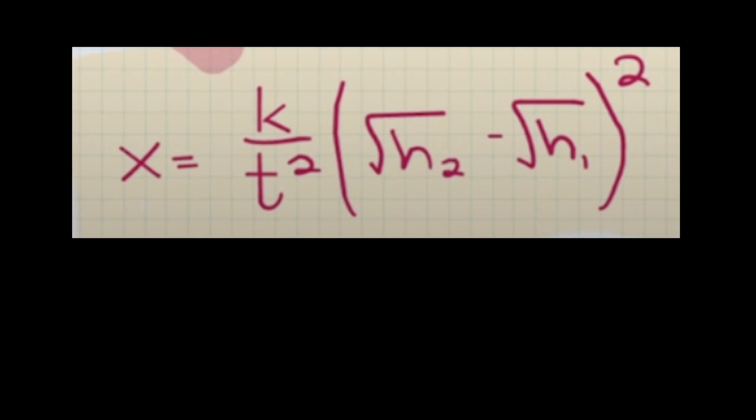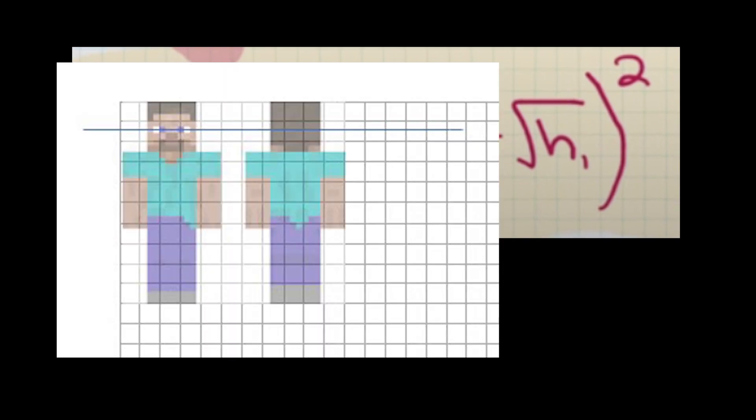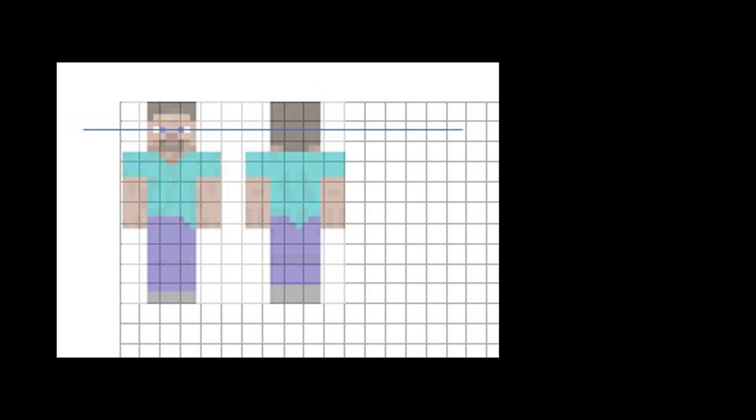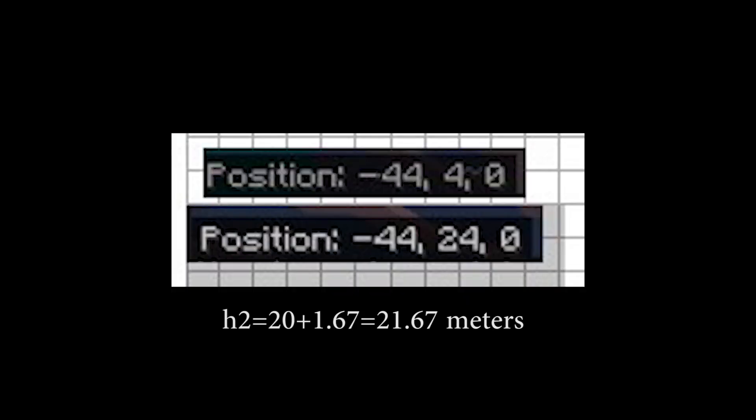From this equation, we need two heights. We see the sun from eye level, so I'll use a proportion with the character's known height of 1.94 meters. The h1 value will turn out to be 1.67 meters. I made the h2 exactly 20 meters higher.